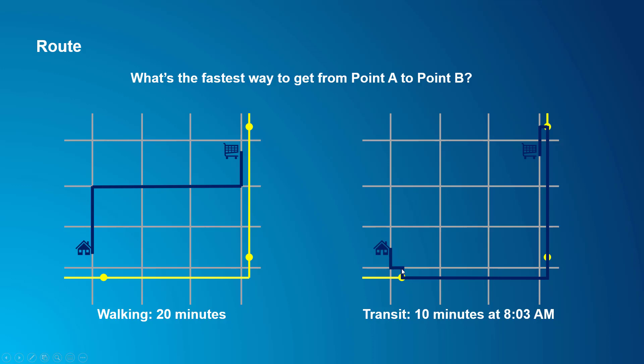You can see in the drawing on the right how the path taken includes the public transit lines. The traveler starts at their house, walks to the transit stop, gets on the bus, travels, gets off at a stop, and then walks the remaining distance to the grocery store. The first takeaway is that you can include public transit data in your network analysis, allowing people to travel by transit when it's convenient. The second takeaway is that the optimal or fastest way to get somewhere might be different depending on the time of day because of the transit schedule.